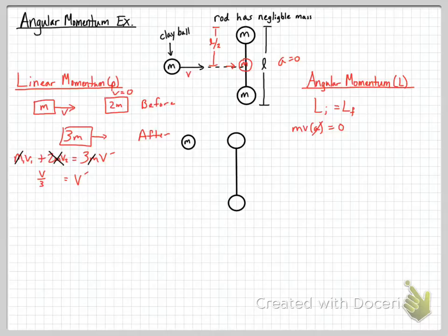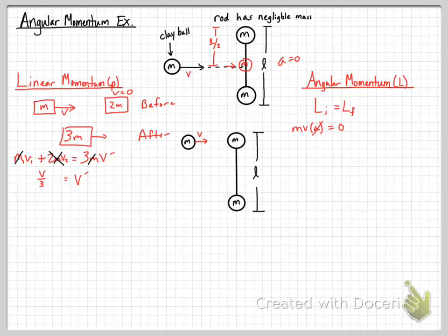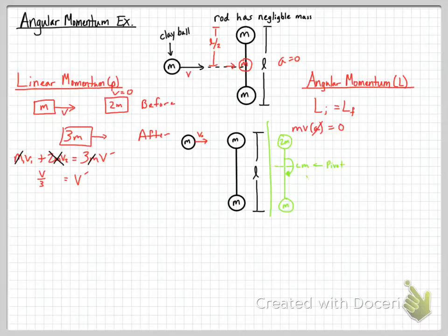So all that happens in this first example is the clay ball hits the dumbbell, they stick together, and the combined mass travels away at v/3 — no rotation. Now let's look at the case where the clay ball travels toward one end of the dumbbell, still with velocity v and the dumbbell still having length l. After the collision we have 2m on one end and m on the other, and we need to find the center of mass as the pivot point.